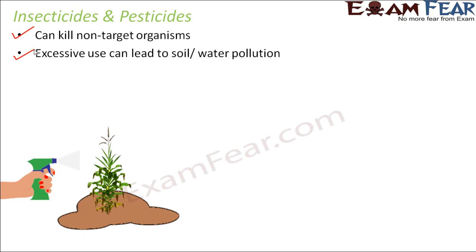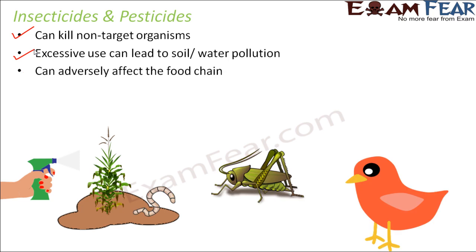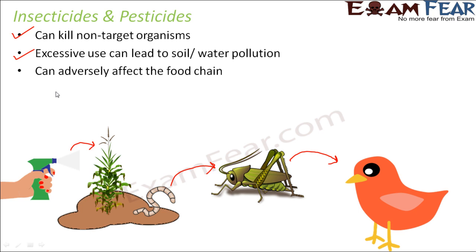This can also adversely affect the food chain. When we spray insecticide on a plant, it gets into the soil. Small insects and earthworms present in the soil absorb the poison. These earthworms are eaten by bigger insects, and those insects might be eaten by birds — so the poison enters the food chain from one organism to another. This can also destroy the soil ecosystem, since any toxic substance entering an ecosystem will adversely affect it.